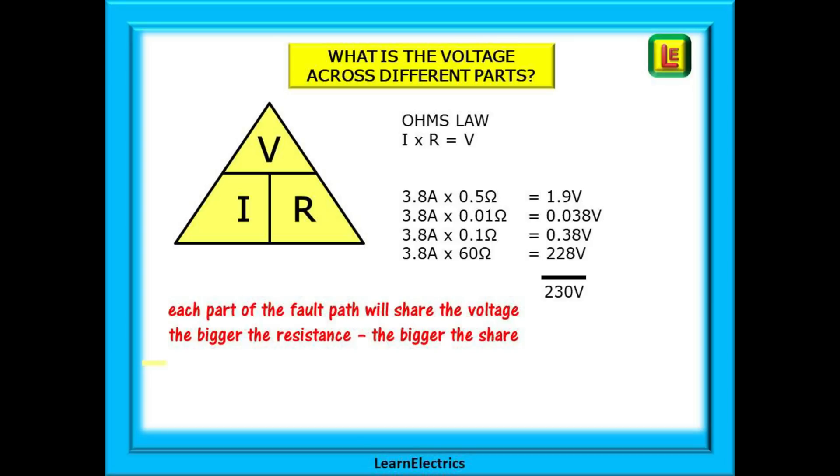Going back to Ohm's law, current times resistance gives us the voltage. So if we multiply the total current by the individual resistance for each part, we will have the individual voltage drop for each stage. The calculations are as shown and if we add all the individual voltage drops together we will get our supply voltage of 230 volts, give or take a small amount for rounding up and down. As you can see, each part of the fault path will share the voltage in proportion to its resistance value. The bigger the resistance, the bigger the share of the voltage.